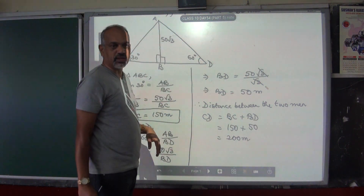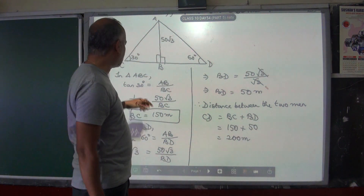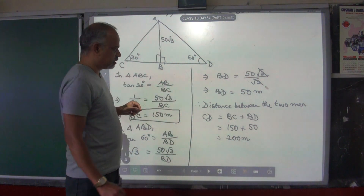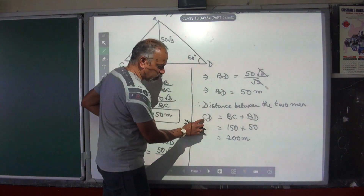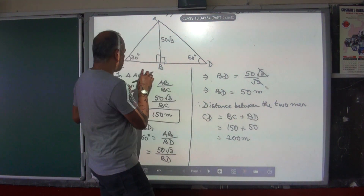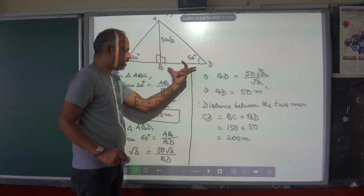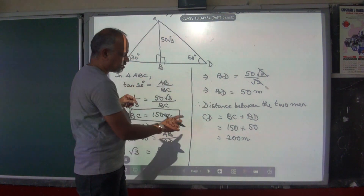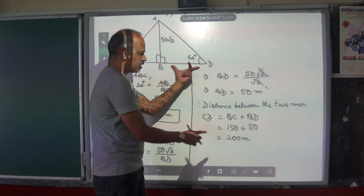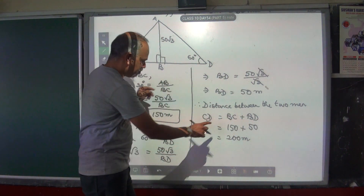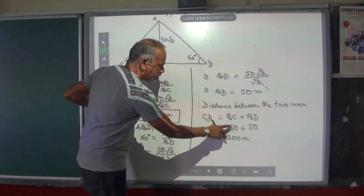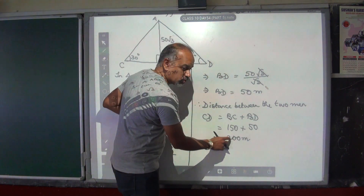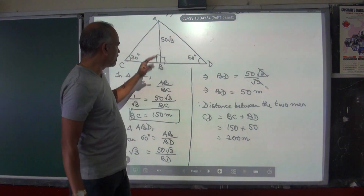The question said you are finding the distance between the two men, that is the distance from C to D. Distance CD is made of two parts: BC and BD. So if you add both of them you will get the length CD. CD is equal to BC plus BD. BC is 150 plus BD is 50. Add both of them and that gives you 200 meters. So that is the first question.